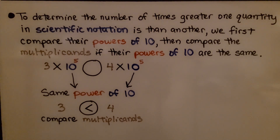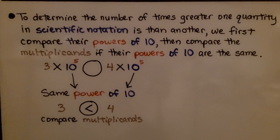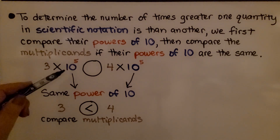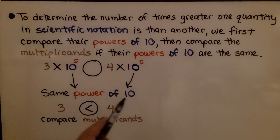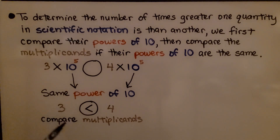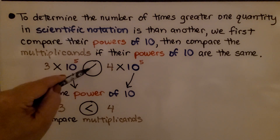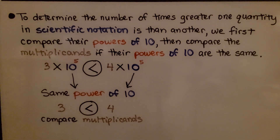To determine the number of times greater one quantity in scientific notation is than another, we first compare their powers of 10, then compare the multiplicands if their powers of 10 are the same. We have 3 times 10 to the fifth power and 4 times 10 to the fifth power. Same power of 10, so we compare multiplicands: 3 is less than 4, so we put a less than symbol there.